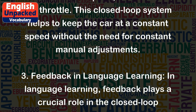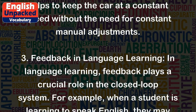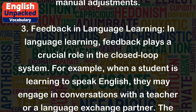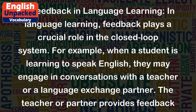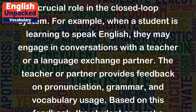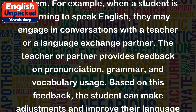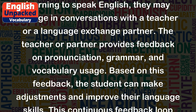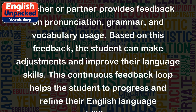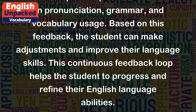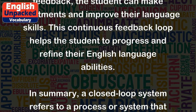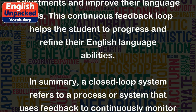Example 3: Feedback in language learning. In language learning, feedback plays a crucial role in the closed loop system. For example, when a student is learning to speak English, they may engage in conversations with a teacher or a language exchange partner. The teacher or partner provides feedback on pronunciation, grammar, and vocabulary usage. Based on this feedback, the student can make adjustments and improve their language skills. This continuous feedback loop helps the student to progress and refine their English language abilities.